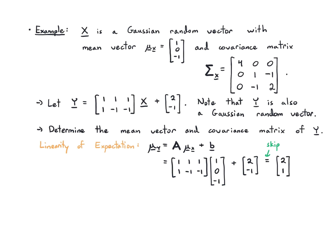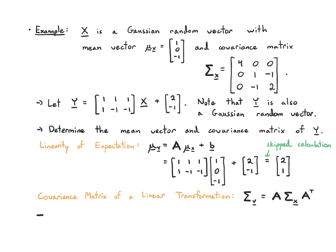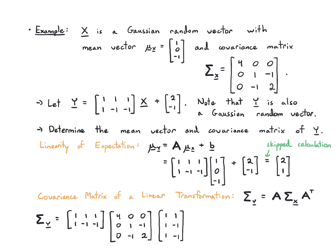For the covariance matrix, we use the property that the covariance matrix of a linear transform y = Ax + b is Σ_y = A·Σ_x·A-transpose. So we compute [[1,1,1],[1,−1,−1]] times the covariance matrix of x times its transpose [[1,1],[1,−1],[1,−1]]. Carrying that through gives Σ_y = [[5, 3],[3, 5]]. Again, the detailed calculation is skipped — you can verify this in MATLAB.